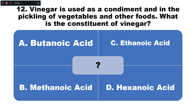Question number twelve: Vinegar is used as a condiment and in the pickling of vegetables and other foods. What is the constituent of vinegar? Option A: butanoic acid, B: methanoic acid, C: ethanoic acid, D: hexanoic acid. The correct answer is option C — vinegar contains ethanoic acid, which is used for preserving food substances.